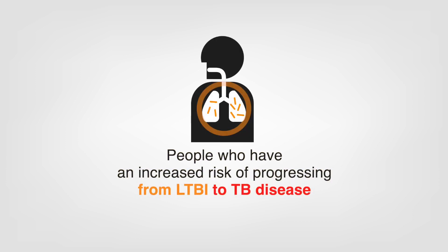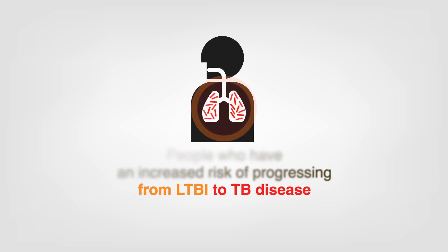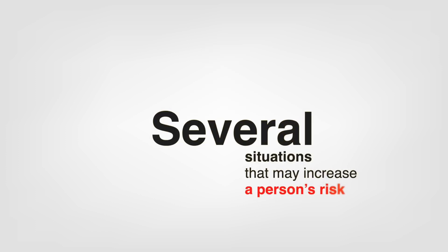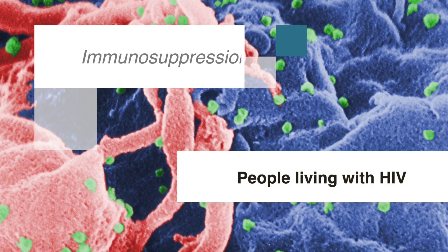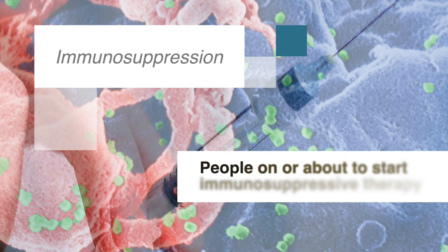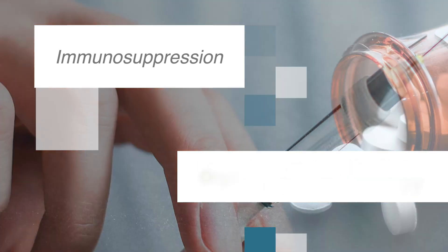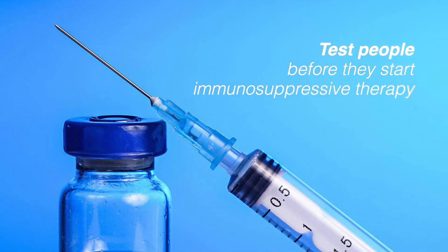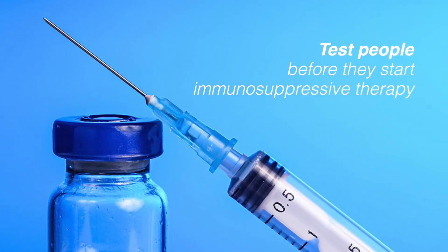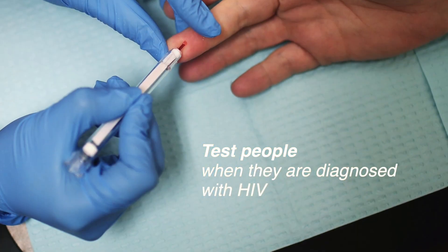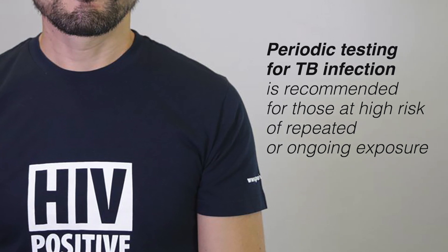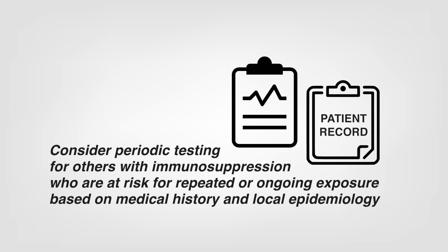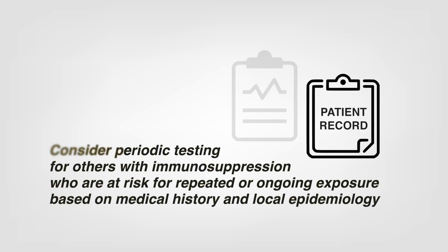Now, let's talk about those who have an increased risk of progressing from LTBI to TB disease if they are infected. Immunosuppression — including people with HIV infection, those on or about to start TNF-alpha inhibitors or prolonged treatment with corticosteroids, and organ transplant recipients — increases that risk. Test people before they start immunosuppressive therapy, such as TNF-alpha inhibitors. Test people for TB when they are diagnosed with HIV. For people living with HIV who are at high risk of repeated or ongoing exposure, periodic testing for TB infection is recommended. Consider periodic testing for others with immunosuppression who are at risk for repeated or ongoing exposure based on medical history and local epidemiology.